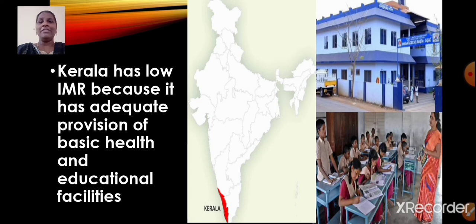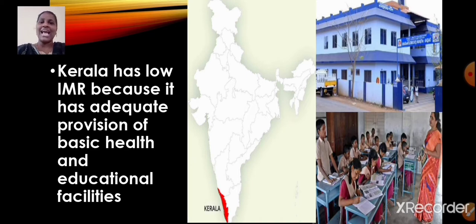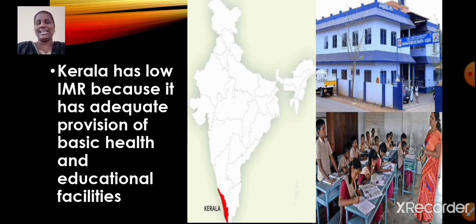Kerala has a low infant mortality rate. Do you know why? Because it has adequate provision of basic health and educational facilities. A state should have a low infant mortality rate to be considered developed, and Kerala achieves this because of its adequate provision of basic health and educational facilities.